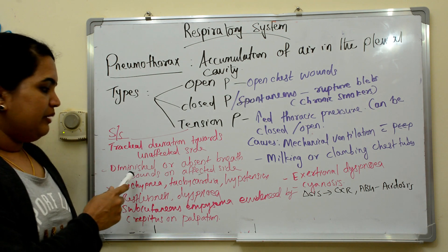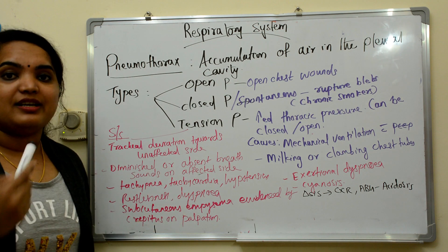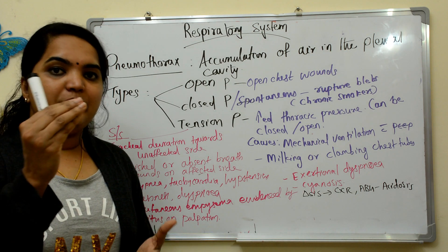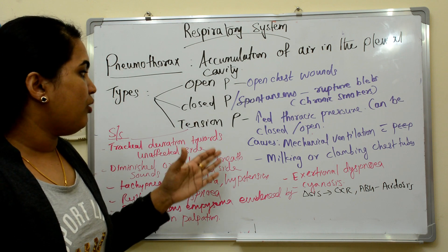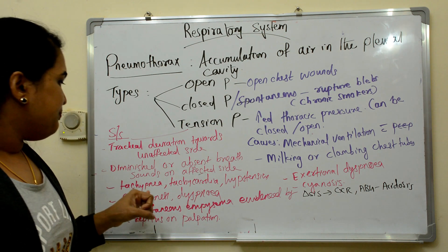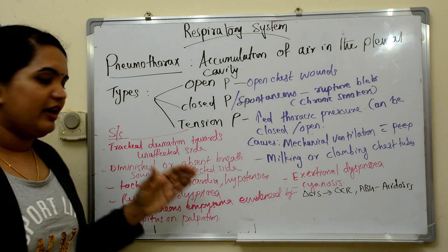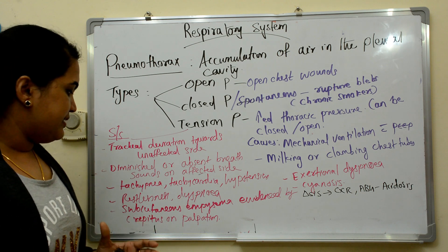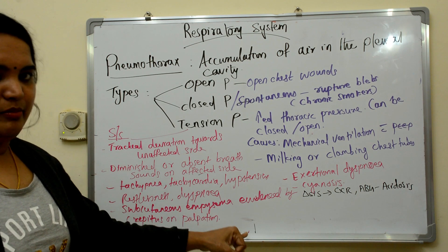Diminished or absent breath sounds on the affected side is an important characteristic of tension pneumothorax. Other symptoms include tachypnea, tachycardia, hypotension, restlessness, and dyspnea.